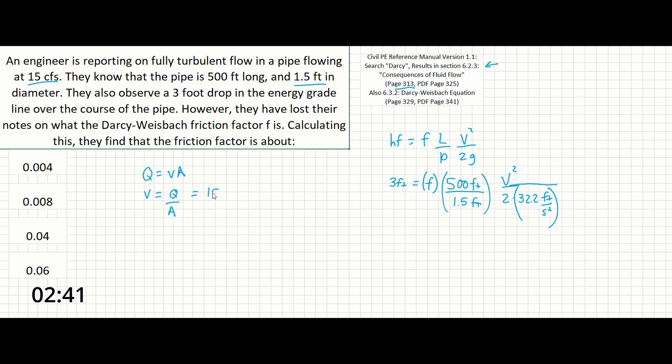Solving for V equals Q over A, this equals 15 CFS divided by the area. The area of a circle is pi times 1.5 feet (our diameter) squared over 4. This gives us about 8.5 feet per second, which we can plug in for V.